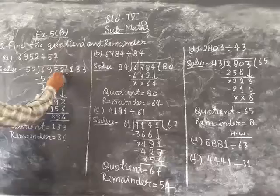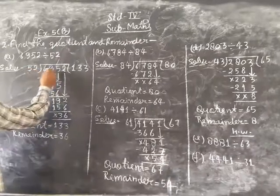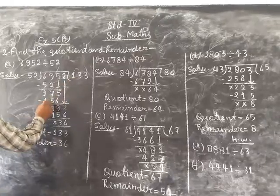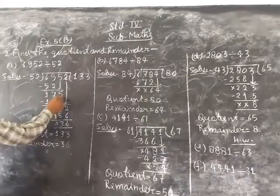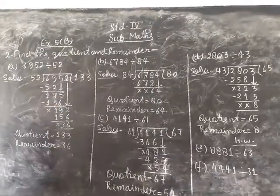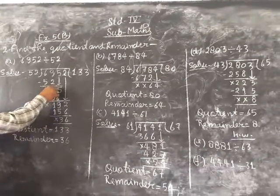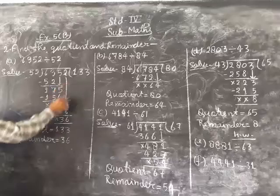6 minus 5, 1, bring down 5. So 52 divided by 175. 52, 3 times 1, 156. 5 minus 6, 9. 6 minus 5, 1, bring down 2.